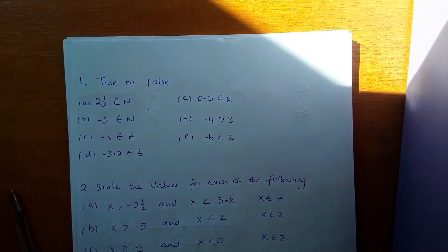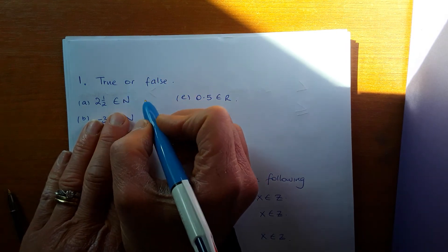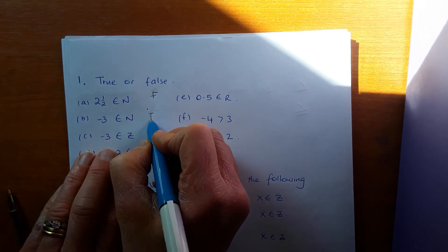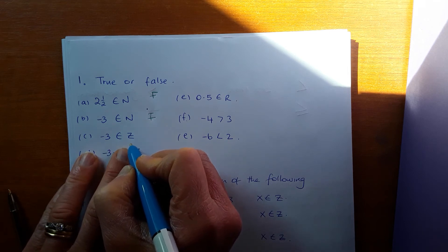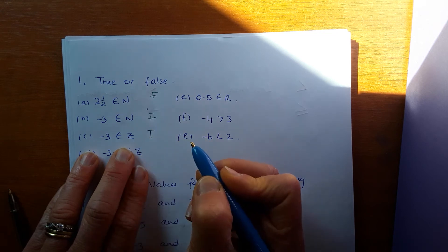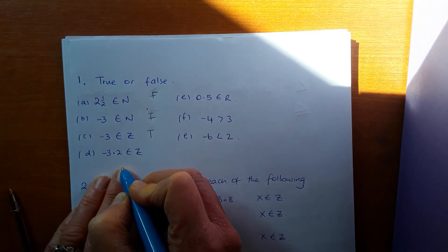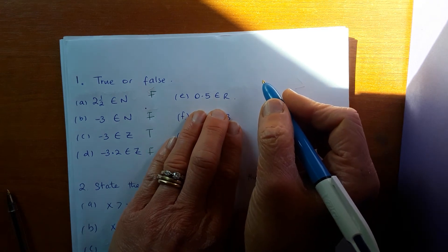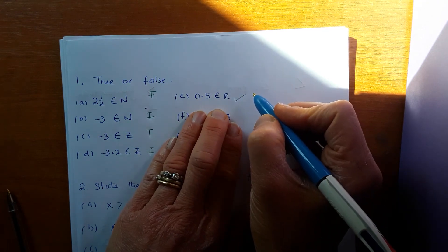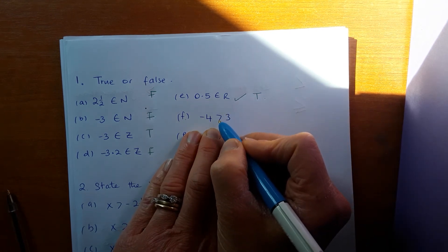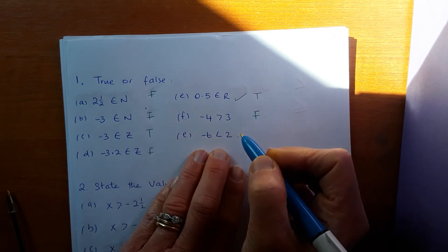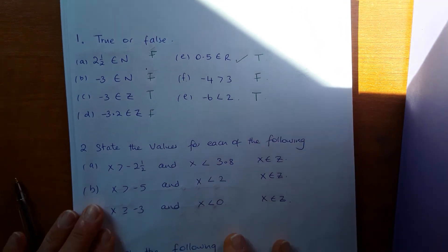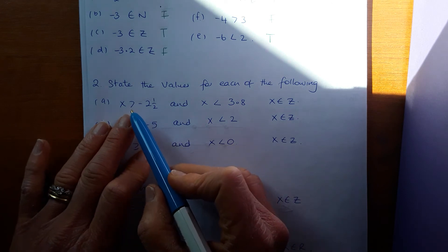Is two and a half a natural number? It's not a positive whole number — it's positive but not whole — so false. Is minus three a natural number? Not a positive whole number, so false. Is minus three an integer? It's a negative whole number, so true. Is minus 3.2 an integer? It's not a whole number, so it's not an integer — it's a real number. Is 0.5 a real number? Yes, true. Is minus four greater than three? No, false. Is minus six less than two? Yes, true.